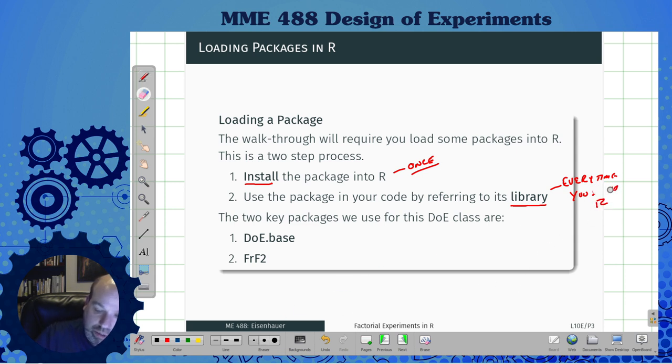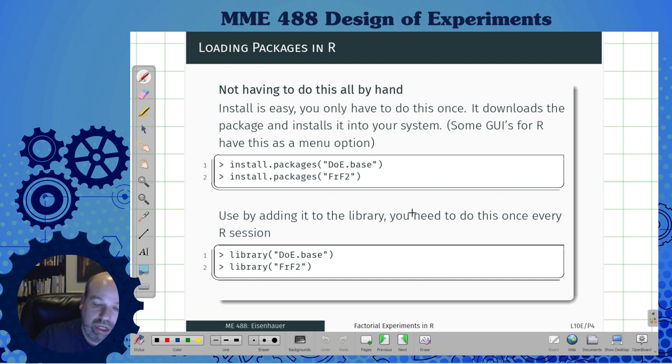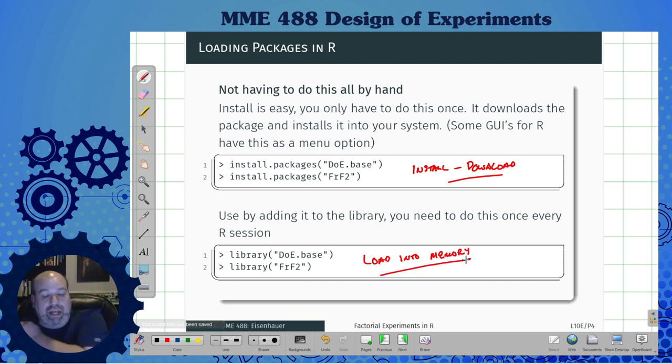The two packages we're going to use for this are doe.base and frf2. There's another one in Python, pydoe, that can do similar type of ideas. To do this, we just say install.packages. This will download it. You might need to be connected to the internet. Once you've got that, you just have to make sure you load these into memory. You only have to do the first part once ever on an installation. After that, you just refer that you want to add on all the functions that belong in these libraries.